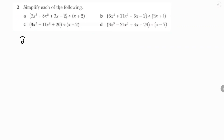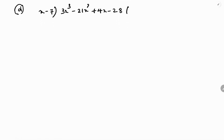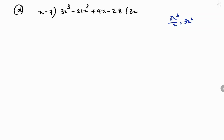Next, part d: divide 3x³ - 21x² + 4x - 28 by x - 7. Take the first term 3x³ and divide by x to get 3x². Write 3x² in the quotient.